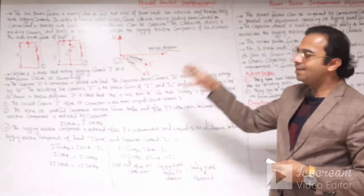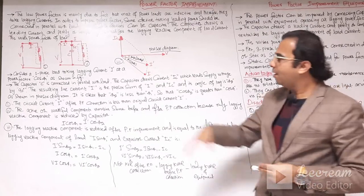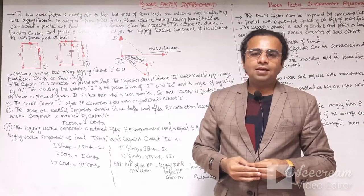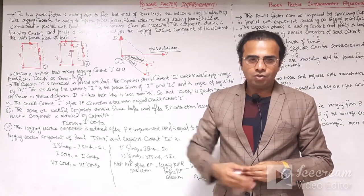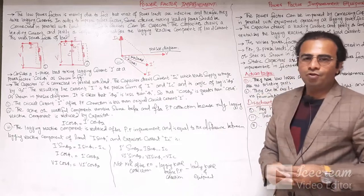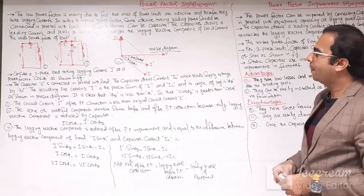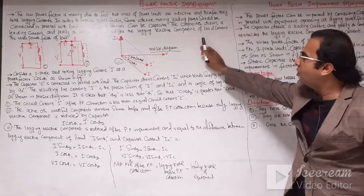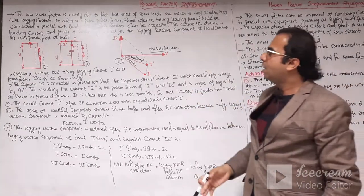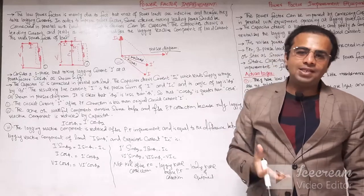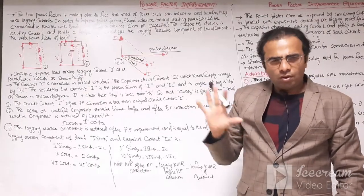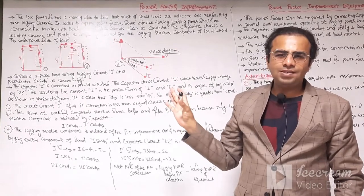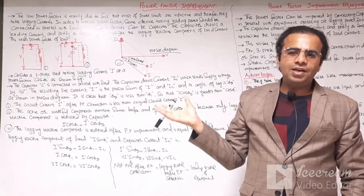When these capacitors are connected in parallel across the inductive loads, they can improve the power factor. The low power factor is mainly due to the fact that most power loads are inductive in nature, therefore the power factor is lagging because they are taking lagging currents. Most of the loads in our power systems — as discussed in previous lectures — are inductive in nature.